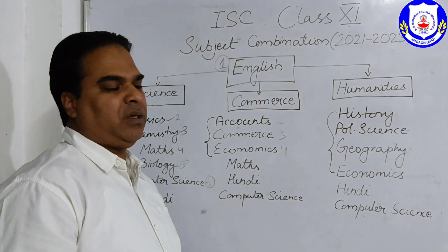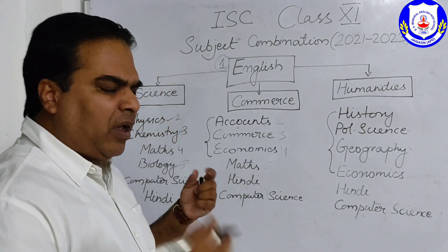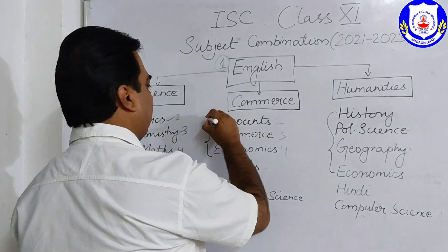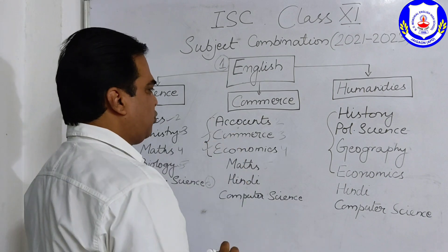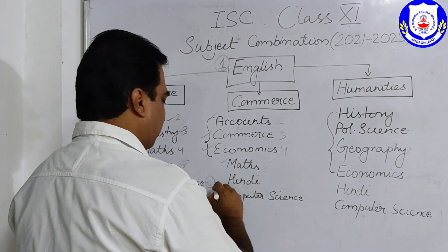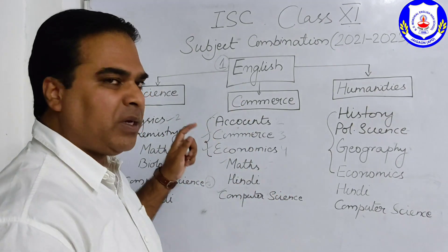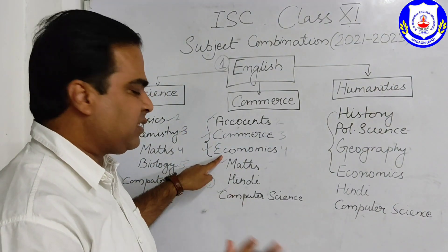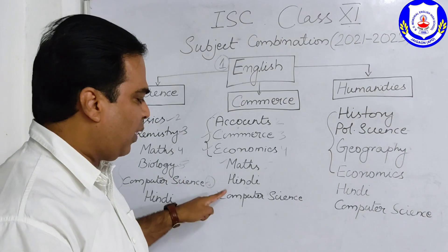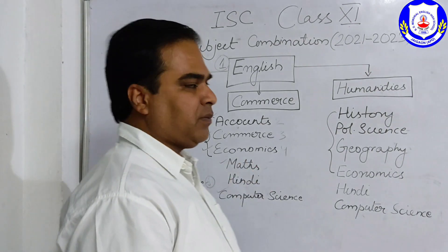In Commerce, if you are interested in Maths, go for it — Mathematics is very important for future studies. Apart from this, you can choose one more subject such as Computer Science or Hindi. So altogether: Accounts, Commerce, Economics, English, Maths, and Computer Science gives you six subjects. You must remember that Accounts, Commerce, and Economics are compulsory — no choice. Apart from these, you can choose either one or two from Maths, Hindi, or Computer Science.